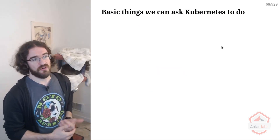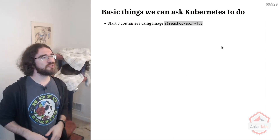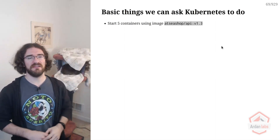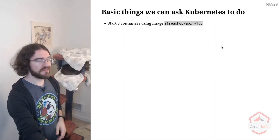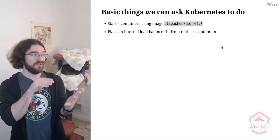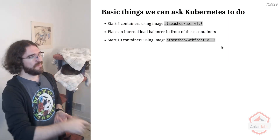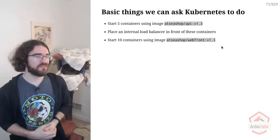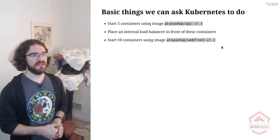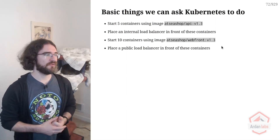So what we do is tell Kubernetes: start a bunch of containers running the image for that internal API. Then put an internal load balancer so I have a way to connect to my internal API. We do the same for the web frontend — a bunch of containers with the web frontend image and a public load balancer for those containers.